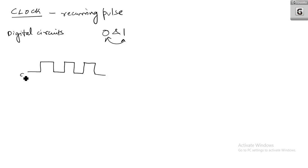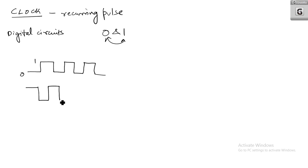These types of signals are known as clock signals. You can also have an inverse clock, that means starting from 1 and going to 0 — like this, you can have a clock sequence. So this is 0 and this is 1.